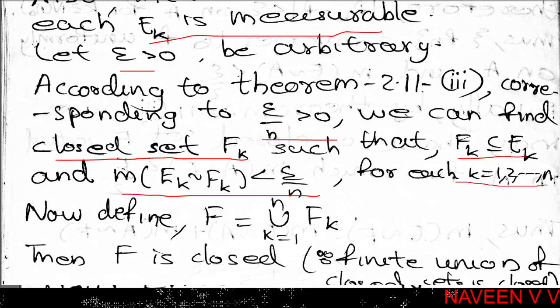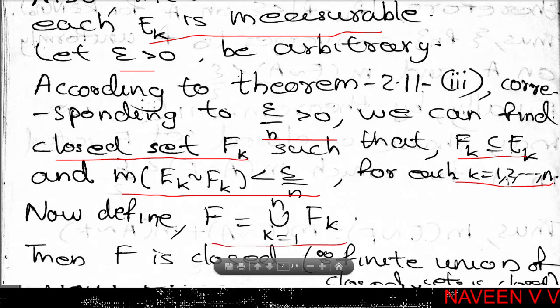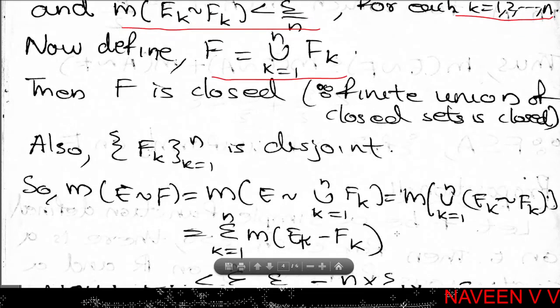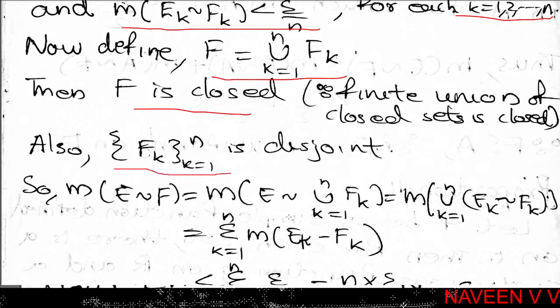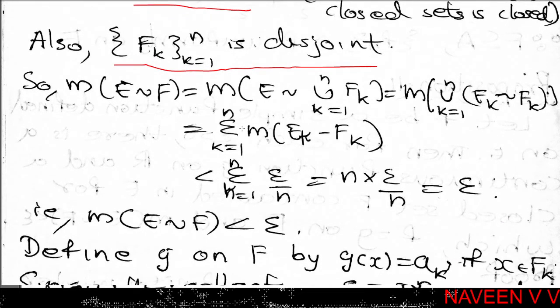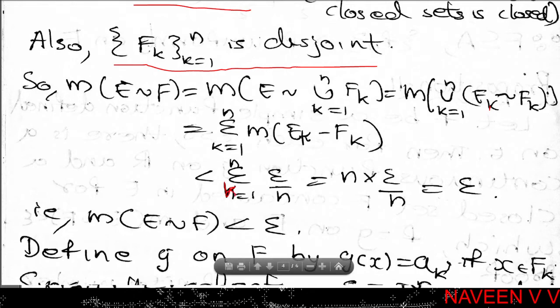Now define F equal to the union over k equal to 1 to n of Fk. A finite union of closed sets is closed, so F is a closed set. For each k, measure of Ek minus Fk is less than epsilon by n. Summing, measure of E minus F is less than summation over k equal to 1 to n of epsilon by n, which equals n times epsilon by n, which equals epsilon. So measure of E minus F is less than epsilon.